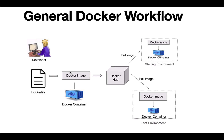Once we have a Docker image on our local machine, we can push it to an online cloud repository called Docker Hub. Once we push the Docker image to Docker Hub, we can pull that image on any environment and start deploying it in a Docker container — for example, staging, test, production, or UAT environments. We can pull the Docker image on any environment and run it in a container.